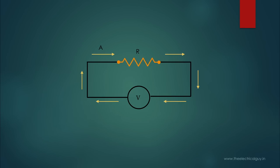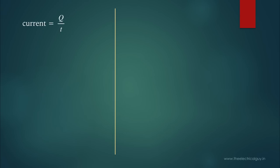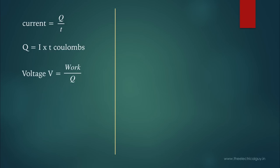When we apply voltage V across the circuit, current I will start flowing against the opposition offered by the resistance R. From the concept of current, we saw that current is charge flowing per second — that is, current equals Q divided by T. We can further write this as Q equals I multiplied by T. We have also seen that voltage equals work divided by charge, so we can write work equals V multiplied by Q.